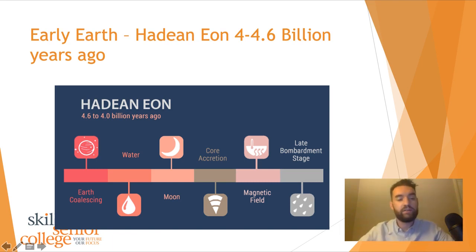The first eon that we're talking about with earth is called the Hadean Eon. The Hadean Eon occurred 4.6 to 4 billion years ago. You'll see this little graph here, it's a timeline. The earth began forming, that's what coalescing means. We got water on earth, then the moon formed through a massive collision with another protoplanet. There was core accretion, so our layers, our core, inner core, mantle and crust started to form, which is really important. One of them being our magnetic field, which formed next. Then we had our late bombardment stage, which was near the end of the Hadean Eon. We had a ton of asteroids bombarding the earth. The Hadean Eon.